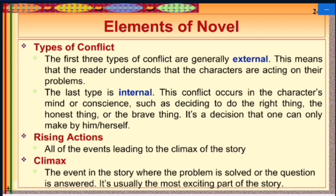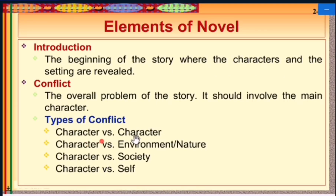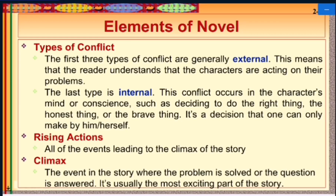Conflicts are either external or internal. The first three types — character versus character, character versus nature, and character versus society — are external conflicts, meaning characters are acting on their problem in the outside world. Internal conflict occurs in the character's mind, such as deciding to do the right, honest, or brave thing — a decision only one can make for themselves.